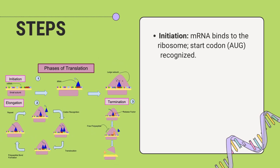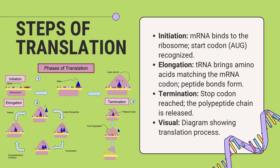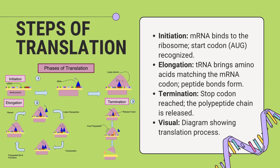The translation process consists of three main stages: initiation, elongation, and termination. During initiation, the ribosome assembles around the mRNA and the start codon is recognized. In elongation, tRNA molecules bring amino acids that are added to the growing polypeptide chain. Termination occurs when a stop codon is encountered, signaling the end of protein synthesis and release of the completed protein.